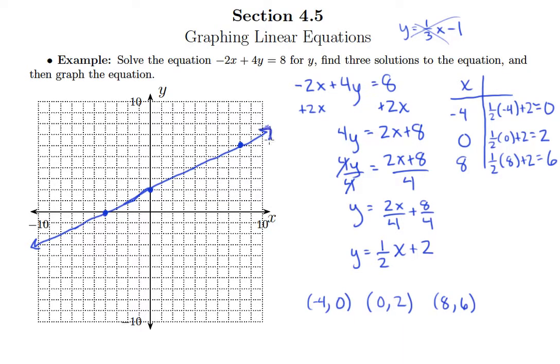We get a line going through those points. Remember, always put arrows indicating that the line extends forever in both directions. This is the graph of our equation negative 2x plus 4y equals 8.